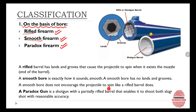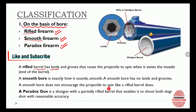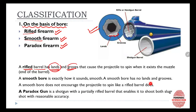Other than this, the mixture of both rifled and smooth is called a paradox firearm. A rifled barrel has lands and grooves — the elevated portion is called the land and the depressed area is called the groove. These lands and grooves cause the projectile to spin when it exits the muzzle end of the barrel.